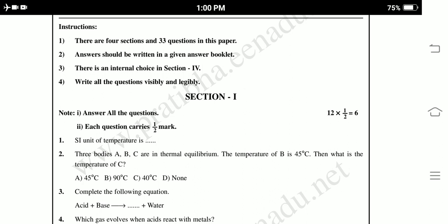First question, SI unit of temperature is. Second, 3 bodies A, B, C are in thermal equilibrium. The temperature of B is 45 degree Celsius. Then what is the temperature of C? So, 45 degree Celsius, 90 degree Celsius, 40 degree Celsius, none.